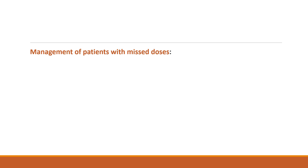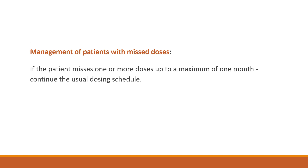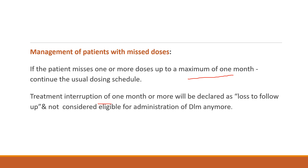How do you manage patients with missed doses? If the patient misses one or two doses up to a maximum of one month, you can continue the dose. However, if there is an interruption of one month or more, the patient will be declared as loss to follow-up and will not be considered for administration of Delamanid anymore.